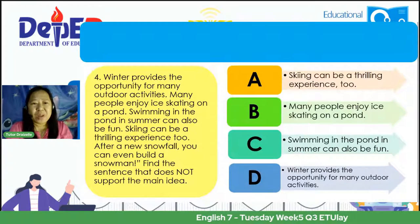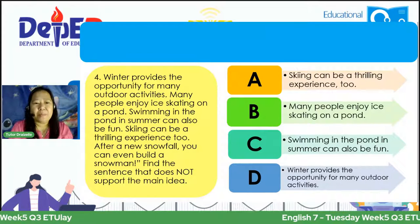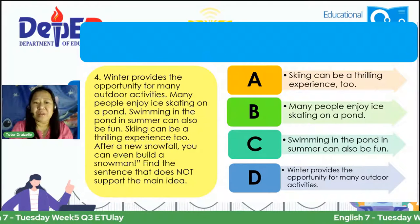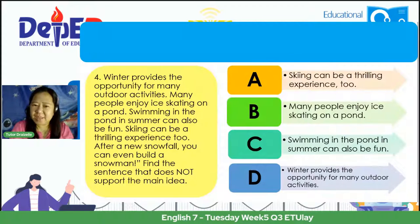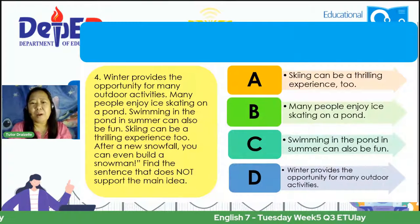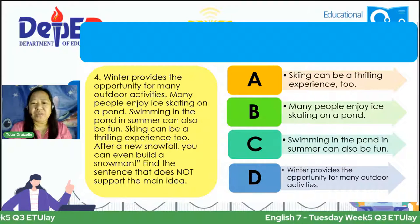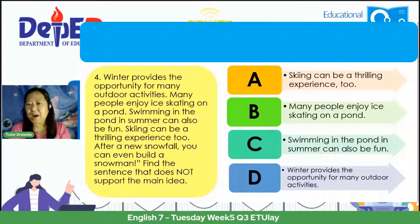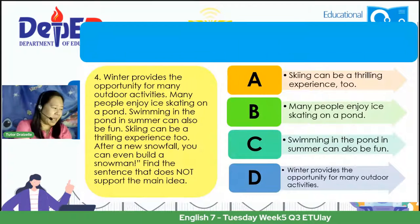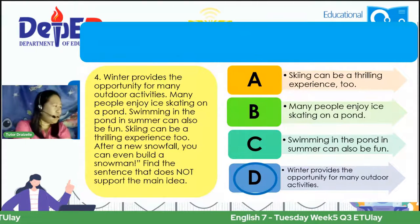Number four: 'Winter provides the opportunity for many outdoor activities. Many people enjoy ice skating on a pond. Swimming in the pond in summer can also be fun. Skiing can be a thrilling experience too. After a new snowfall, you can even build a snowman.' Find the sentence that does not support the main idea. A. Skiing can be a thrilling experience too. B. Many people enjoy ice skating on a pond. C. Swimming in the pond in summer can also be fun. D. Winter provides the opportunity for many outdoor activities. The correct answer is C — swimming in the pond in summer does not support the winter outdoor activities theme.